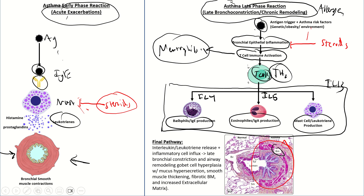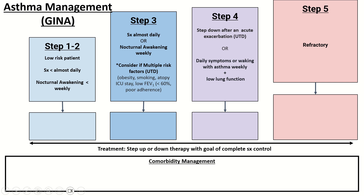This is why ICS is the cornerstone of maintenance control. Following the new GINA guidelines, for step one to two — low-risk patients with less than almost daily symptoms and less than weekly nocturnal awakenings — these patients get ICS/formoterol as needed (PRN). Whenever they need it, they take it; they get both bronchodilation and ICS to decrease bronchial inflammation.